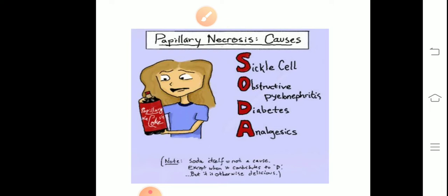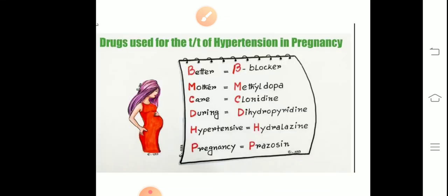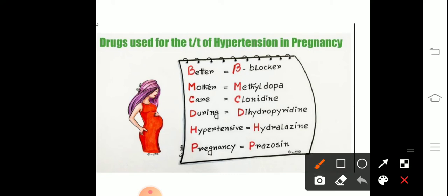Next, drugs used for the treatment of hypertension in pregnancy. With the mnemonic we can remember this by 'Better Mother Care During Hypertensive Pregnancy.' B stands for beta blockers, M stands for methyldopa, C stands for clonidine, D stands for dihydropyridine, H stands for hydralazine, and P stands for pregnancy.